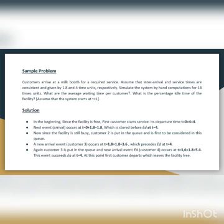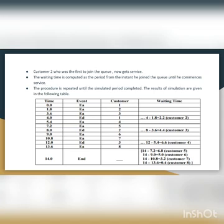Since the facility is still busy, customer 2 is put in the queue as first to be considered. A new arrival event for customer 3 occurs at t equal to 3.6. Customers 3 and 4 arrive before ED at t equal to 4, and customer 3 is placed in the queue. The new arrival event occurs at t equal to 5.4. At t equal to 4, the first customer departs, freeing the facility. Customer 2, who was first in the queue, now gets service. The waiting time is computed as the period from when the customer joined the queue until service commences. This procedure is repeated until the simulated period is completed.